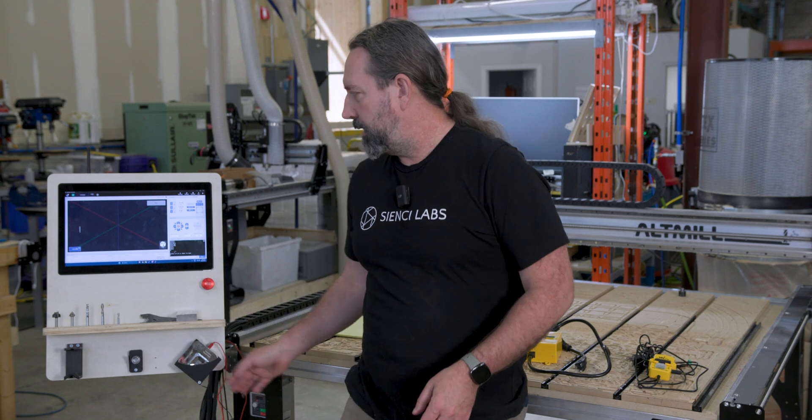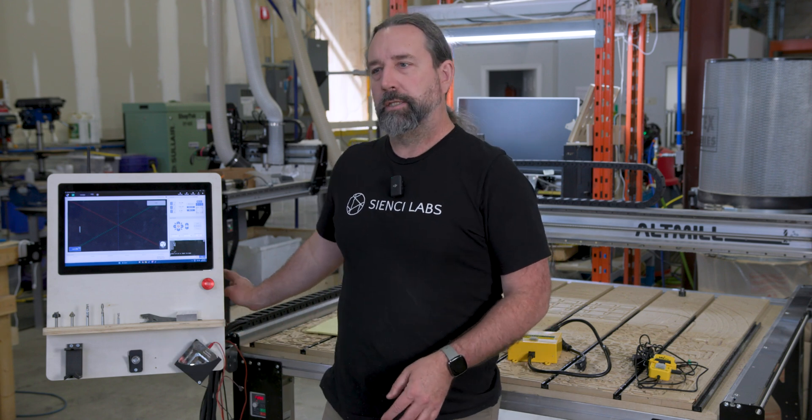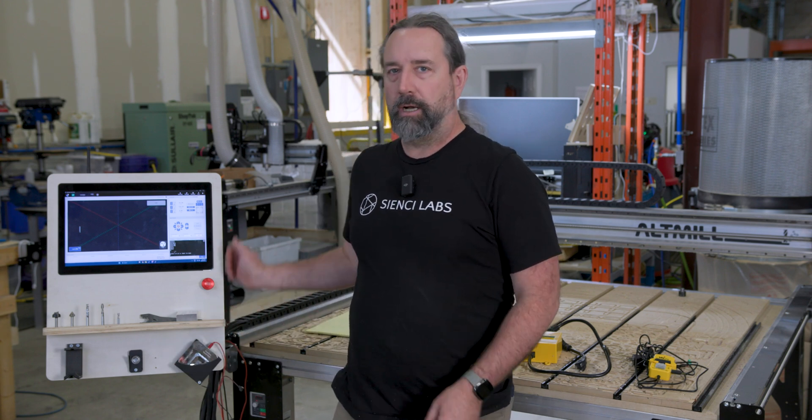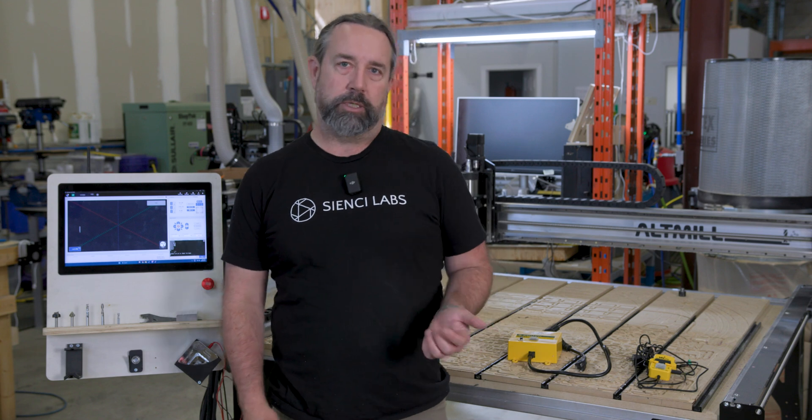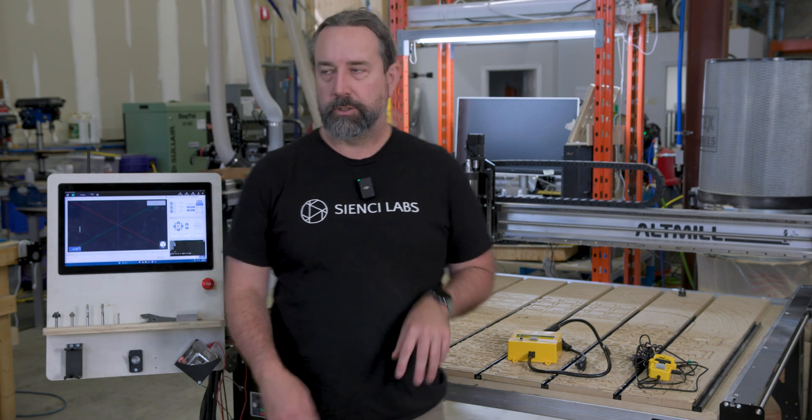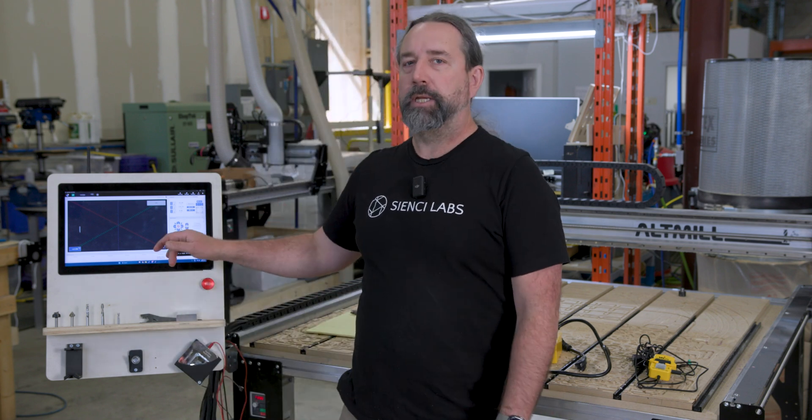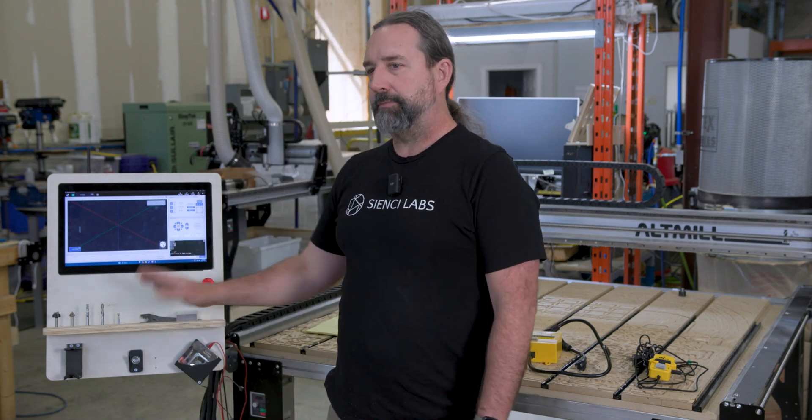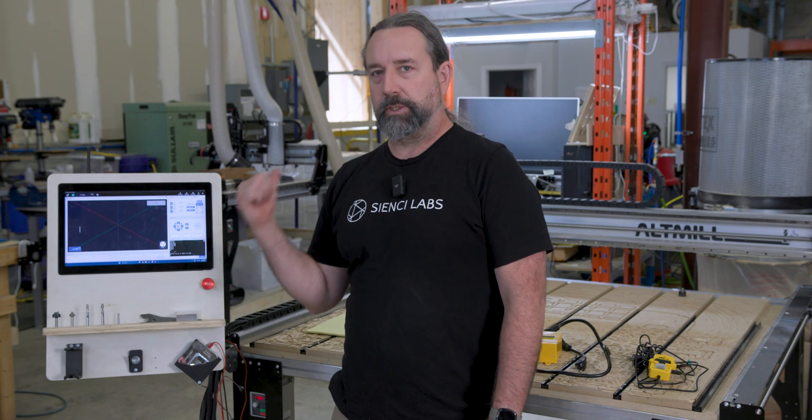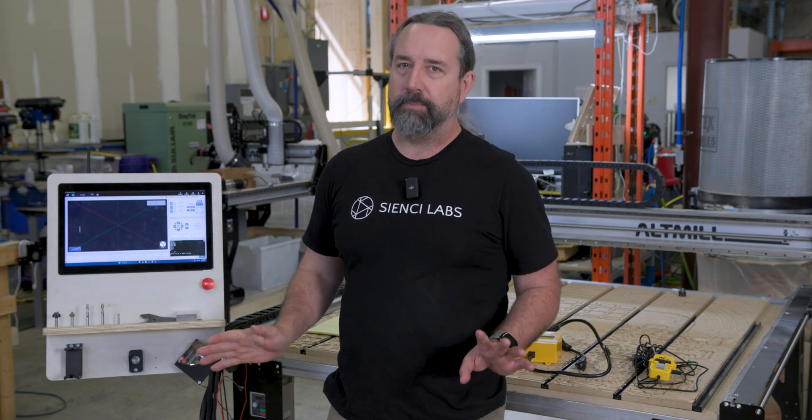Today I'm just going to be walking you through where to plug it in onto the control board. This will be the same for both the alt mill and the long mill control board. So if you've got either one, this will work exactly the same way. I'll also show you how to get it set up in G-Sender so that every time you start a project, this will kick on your shop vac and you don't even have to remember about it.